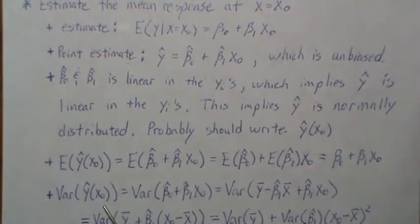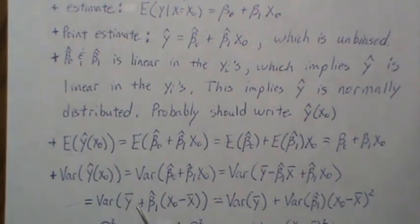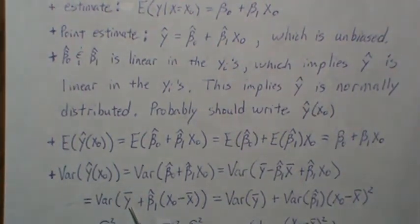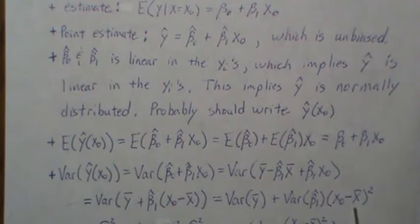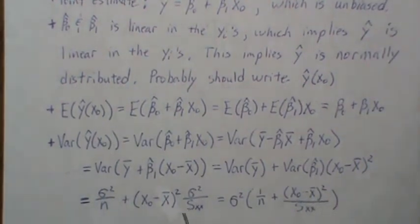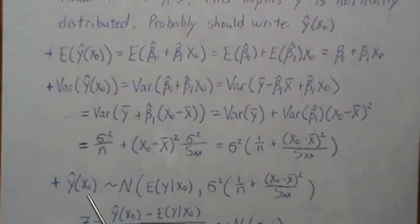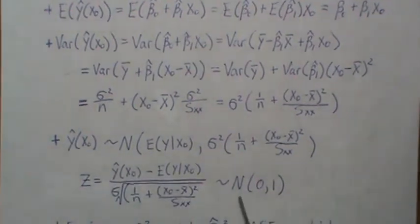Since ŷ is normally distributed, we need to define both the mean and the variance. The variance of ŷ(x₀) involves the variance of β̂₀ and β̂₁. We can combine those — looking at the variance of this linear combination, we have two variables with covariance zero (as proven in a previous video). We get the variance of β̂₀ plus x₀² times the variance of β̂₁. This gives us sigma squared over n plus x₀² times sigma squared over Sxx. Factoring out sigma squared, we find that ŷ(x₀) is normally distributed with this mean and variance. Subtracting the mean and dividing by the standard deviation gives a standard normal distribution.